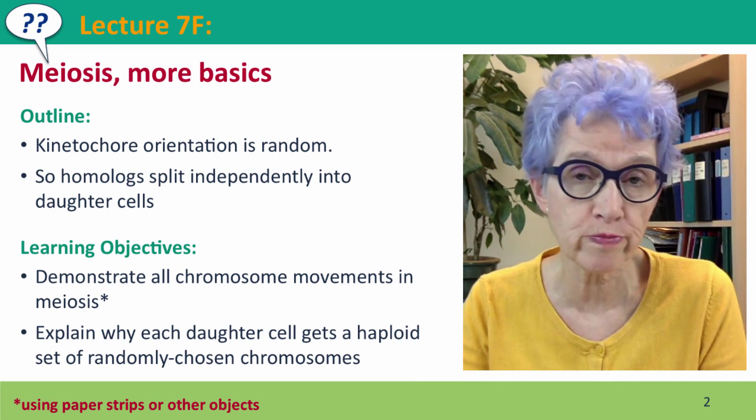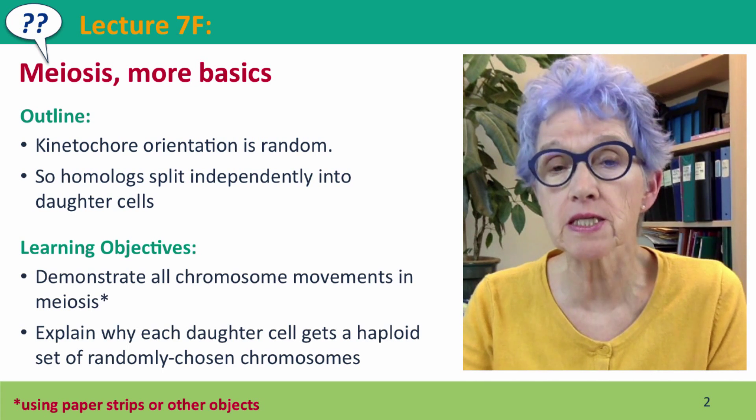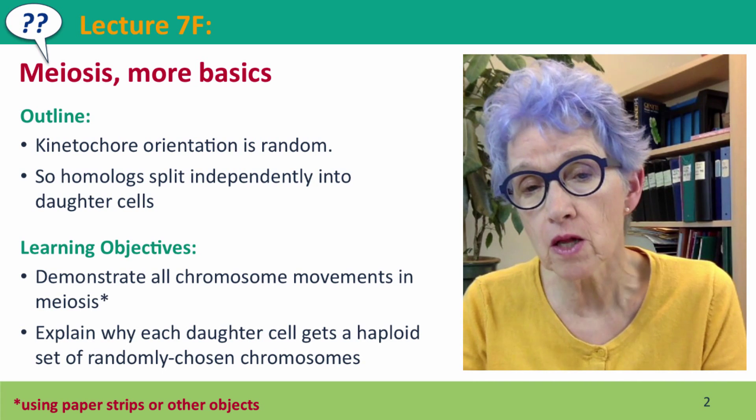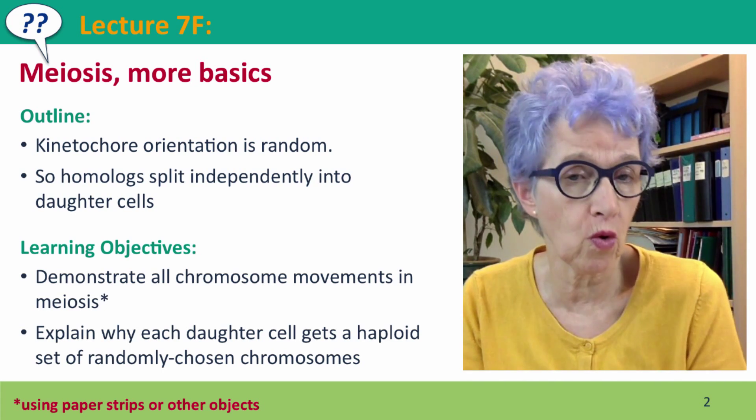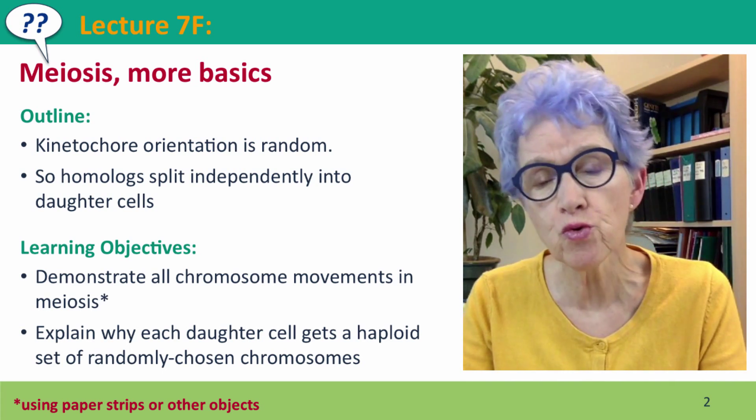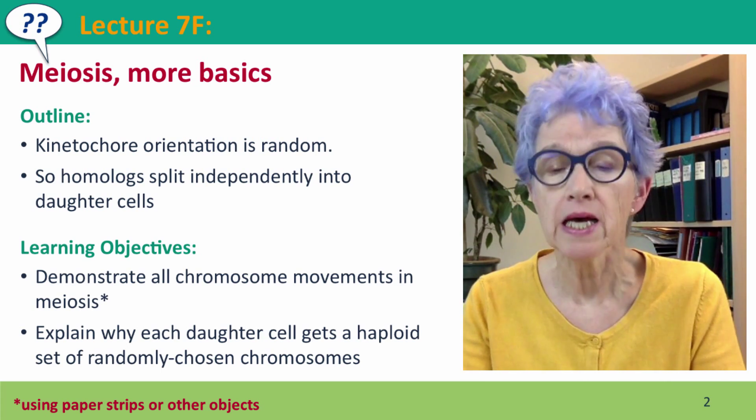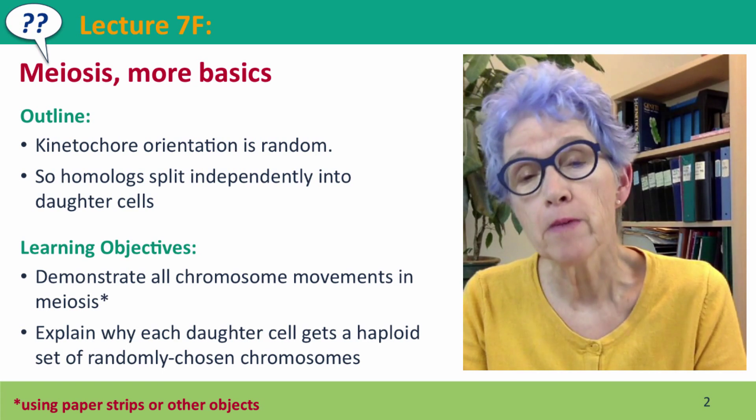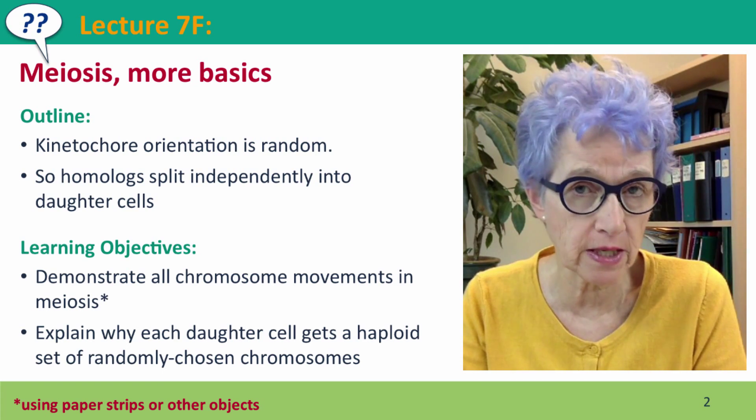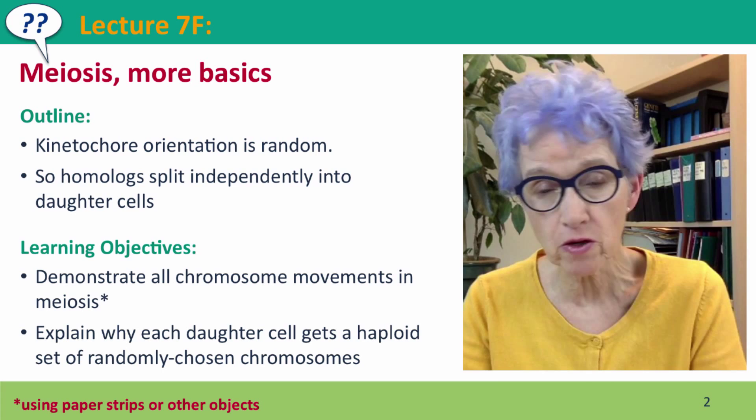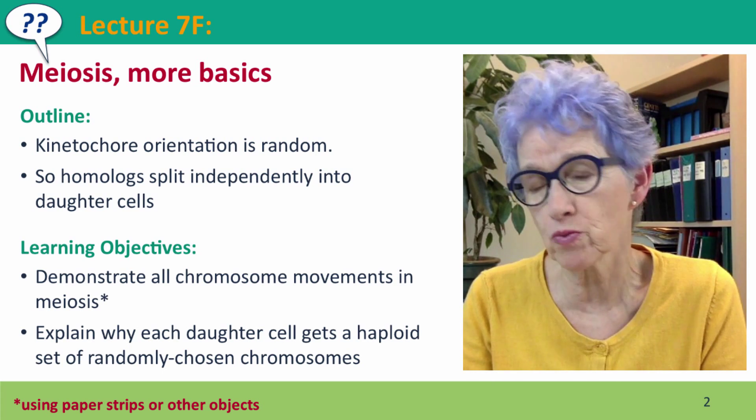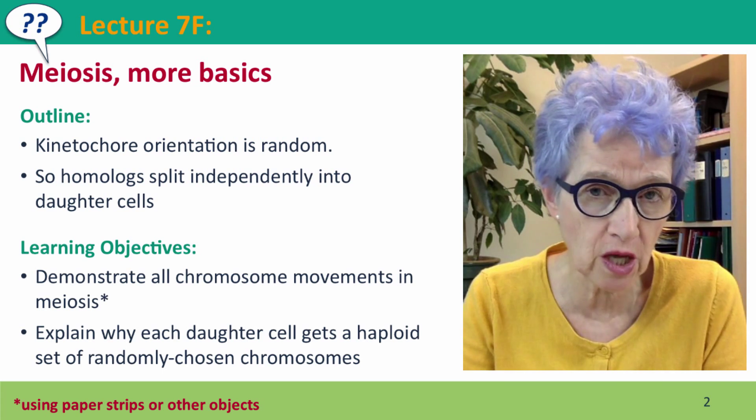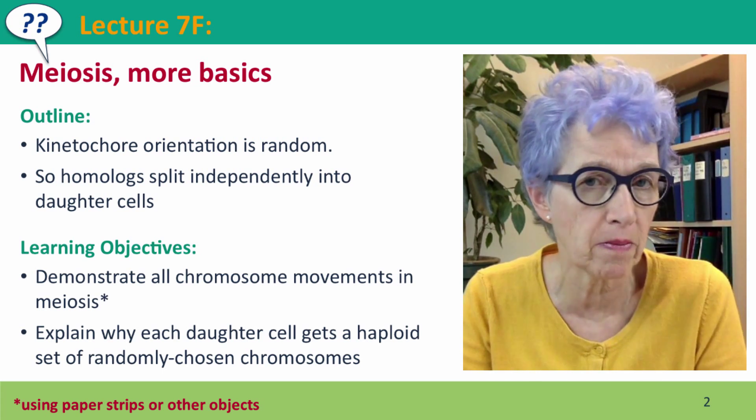We're going to introduce one more point about events in meiosis. Specifically, we're going to think about how the cell accomplishes the goal of making random new combinations of chromosomes in the daughter cells that it produces. And it does this because the orientation of the kinetochores when the chromosomes attach to the spindle fibers is random, so we can't predict which chromosomes are going to be pulled to which side, the dad chromosomes or the mom chromosomes.